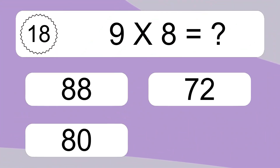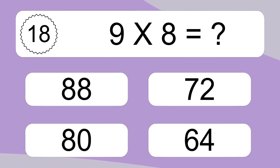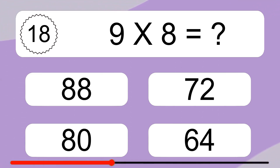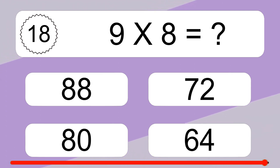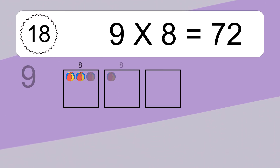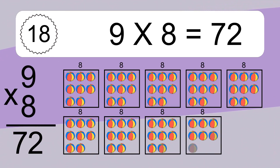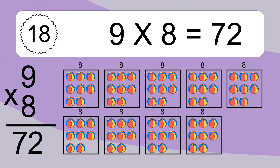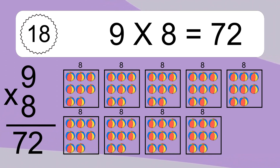9 times 8 equals what? 9 times 8 equals 72. We have 9 boxes, and each box has 8 colorful balls inside. If you count all the balls in all the boxes together, you will have 9 times 8 balls. This equals 72 balls.